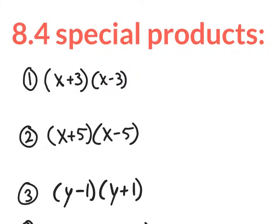This is section 8.4, the final section before we have a quiz — a big quiz. It covers four sections, so I might even call it a test: 8.1 all the way to 8.4. Section 8.1 was classifying polynomials based on degree and number of terms, also adding and subtracting them. 8.2 was distributing a monomial into a binomial or polynomial. 8.3 was multiplying polynomials using distributive property. And 8.4 is special products — products means multiplying, and special because they don't happen that often.